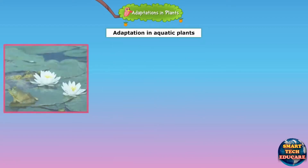Water lily is an aquatic plant which has long spongy stalks or stems that help them to stay afloat.